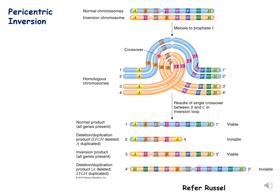After crossover takes place — say the crossing over occurs between the second and fourth chromatid — what are the products after crossing over in pericentric inversion? The first product is the normal product with the order of genes ABCDEFGH. The second product is inviable because it is showing deletion as well as duplication — it has A, B, C, D, and then again A, so there is duplication of A but deletion of the other genes EFGH.